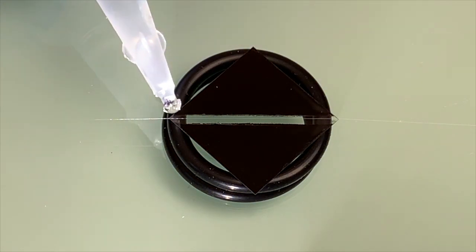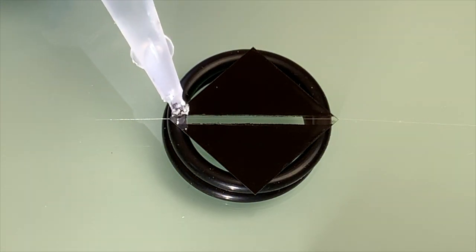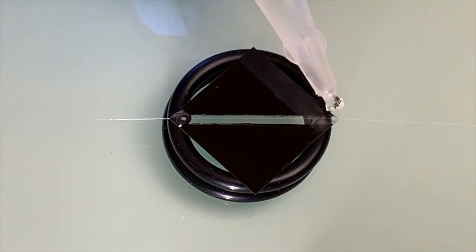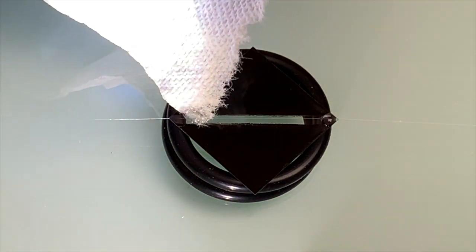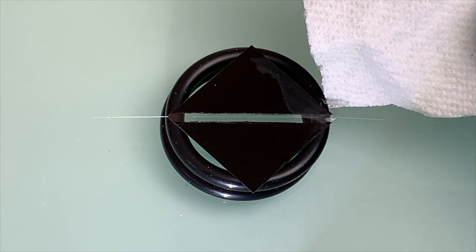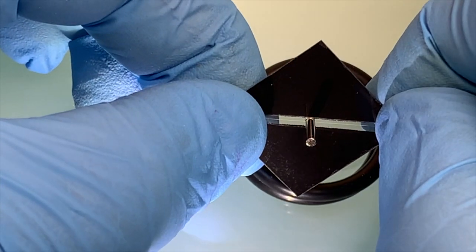Then, deposit a tiny dollop of cyano-acrylate bonding agent, often branded as crazy glue, on each corner, and quickly use a bit of paper towel to dab up the excess before it sets. Once both corners have set, it's time to install the magnets.